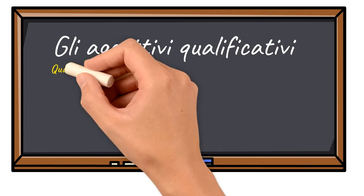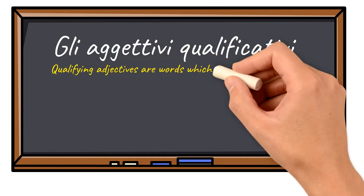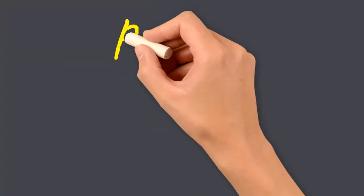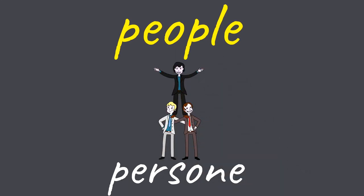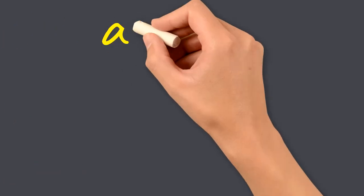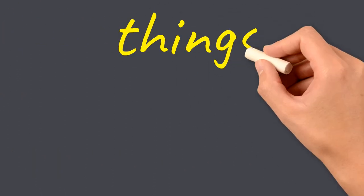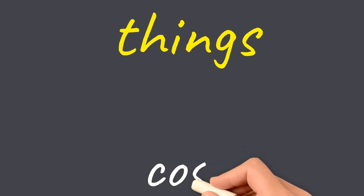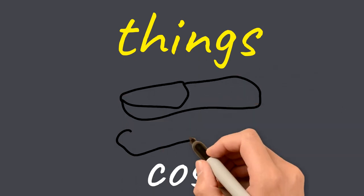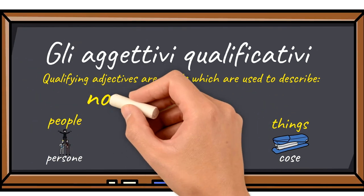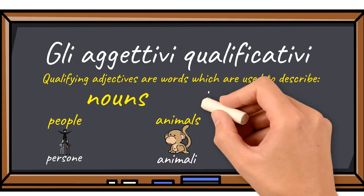What are they? Qualifying adjectives are words which are used to describe names of people, persone, animals, animali, or things. In grammar these are called nouns, in Italian, nomi.